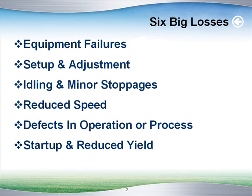Before we talk about OEE too much, we should understand that really what it's measuring is the losses that are affecting your equipment. Here are the six major losses that are common in equipment: equipment failures, setup and adjustment time, idling and minor stoppages, reduced speed, defects in operation or process, startup, and reduced yield. Now, if you understand that these losses occur and we start measuring them, it's much easier to know where to put your attention when you're working on TPM efforts.